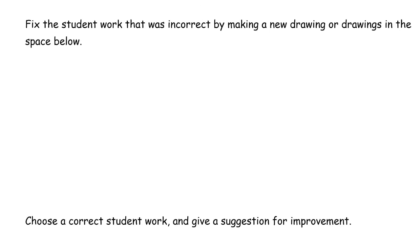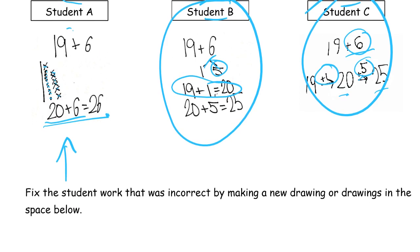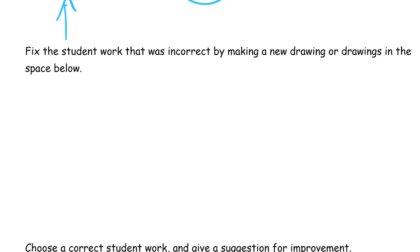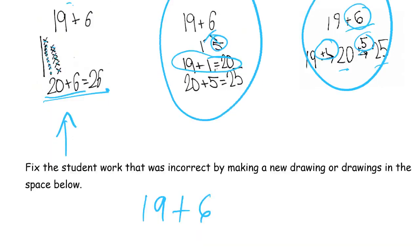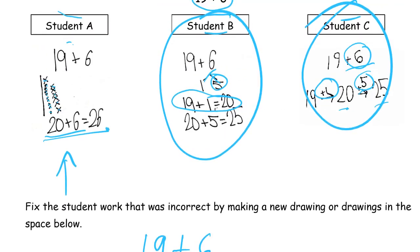Fix the student work that was incorrect by making a new drawing or drawings in the space below. So this one was the one that was incorrect. That's quick 10s. So we'll just solve 19 plus 6 using quick 10s. You don't have to actually use quick 10s, but I think it just makes more sense to use the same method because we've already seen those two.